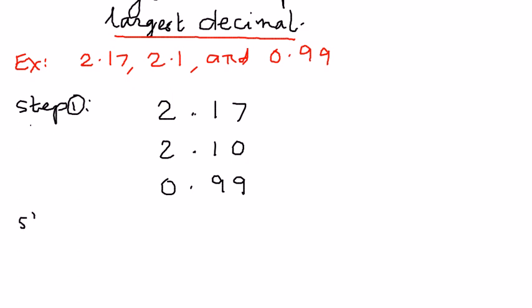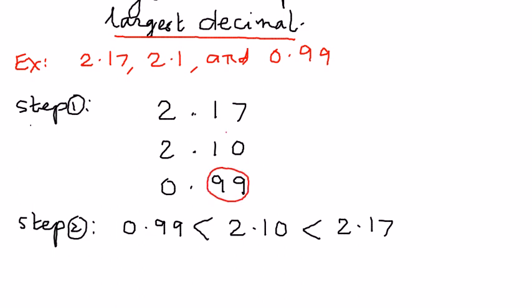Step two: We are going to work from left to right, and then we will compare the digits that have the same place value. In here, as we can see, 0.99 is less than 2.10, and then 2.10 is less than 2.17.